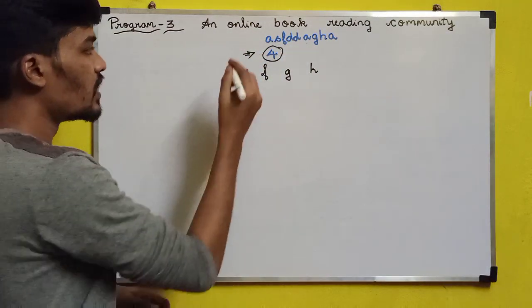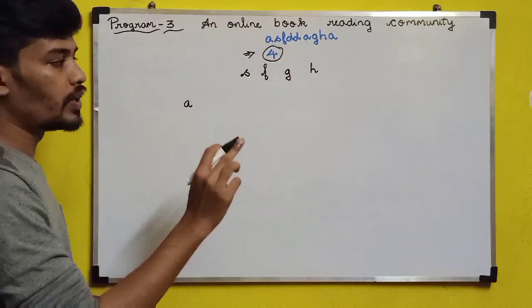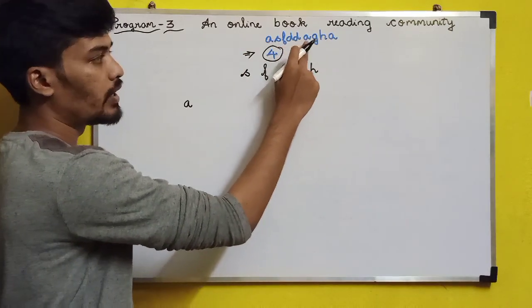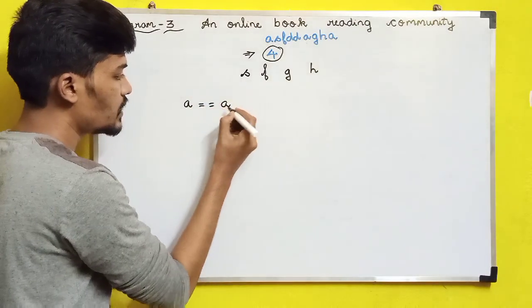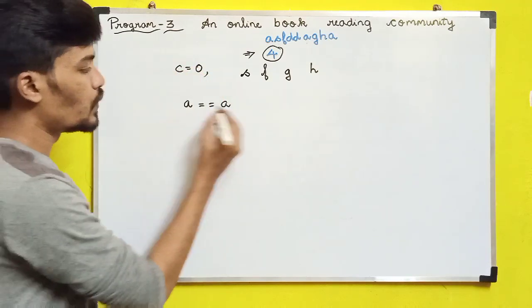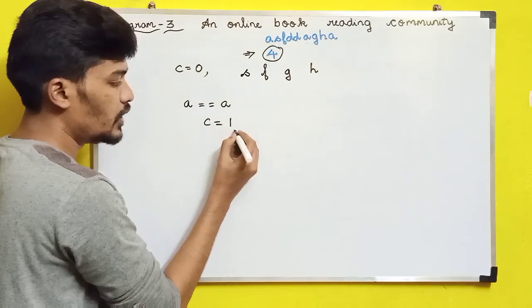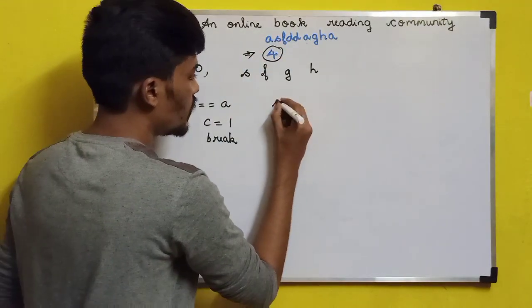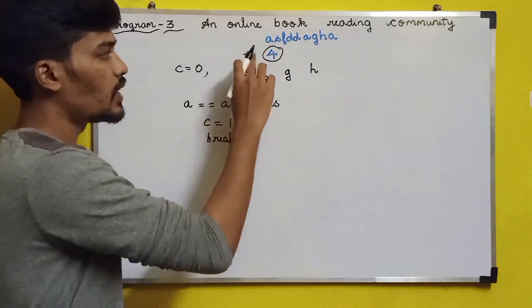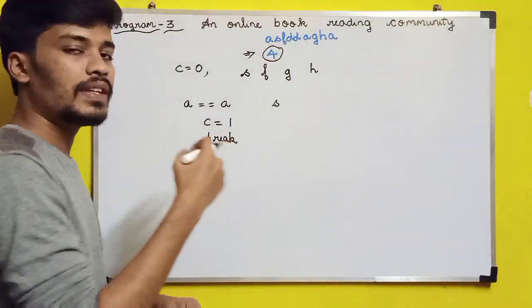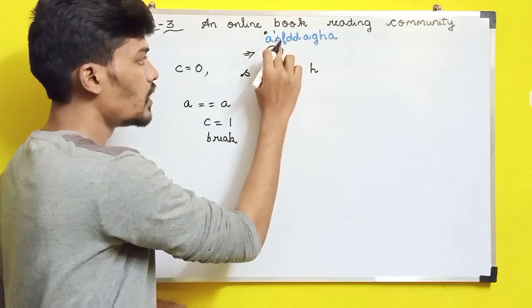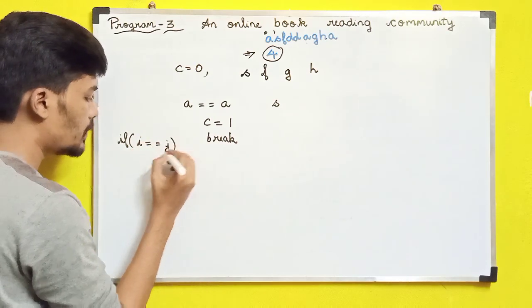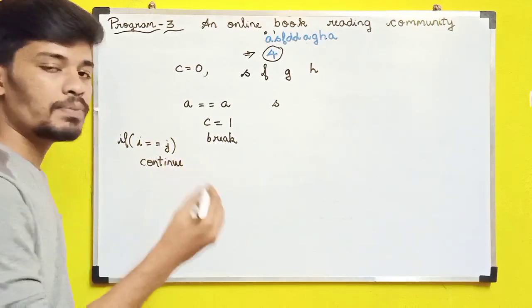The approach is: take the first character A, compare with the next character S — not equal. F — not equal. D — not equal. D — not equal. A — it is equal. So initially we declare a count variable C equal to 0. If A equals A, we change C to 1 and break the loop so it doesn't get incremented into the unique characters count. We also give the condition: if index i equals j, we continue, so the same character is not compared with itself at the same position.